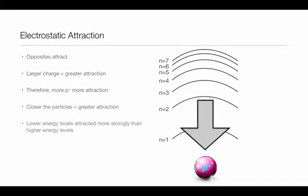Also, the closer that the electrons are to the nucleus, the greater the attraction is going to be. So electrons in the first and second energy level are going to be much more strongly attracted than electrons in the sixth and seventh energy level, which are further away.